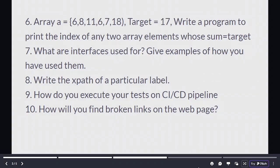Question number six, array A is equal to 6, 8, 11, 6, 7, 18, target equal to 17. Write a program to print the index of any two array elements whose sum is equal to target, which is 17.